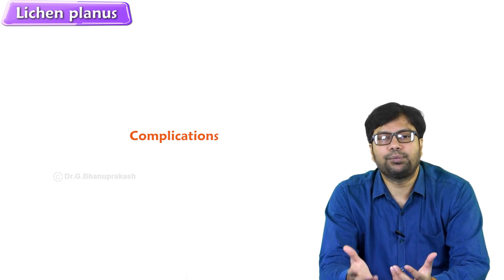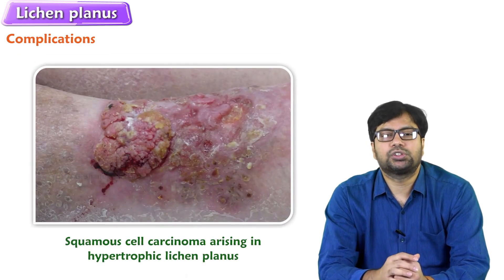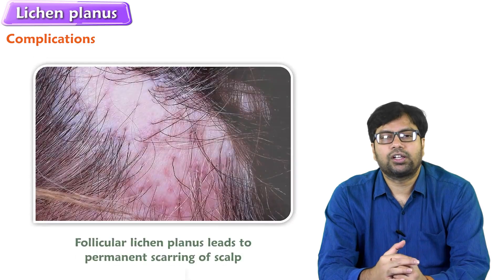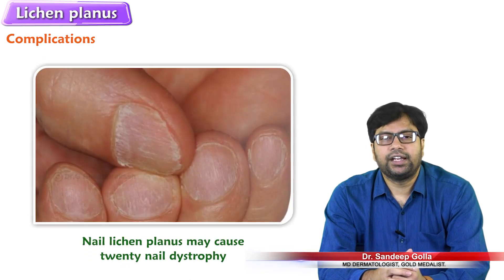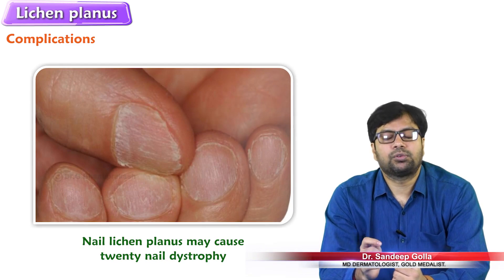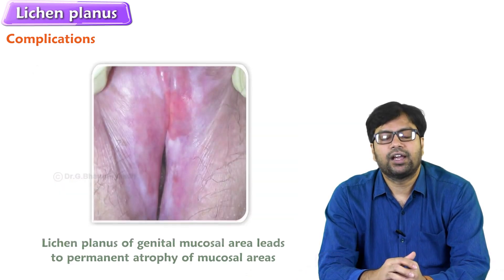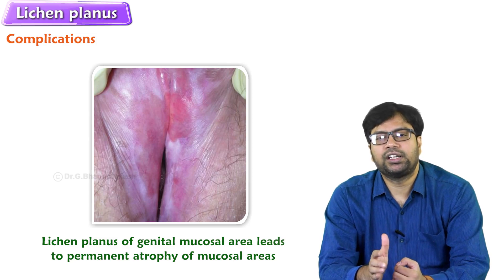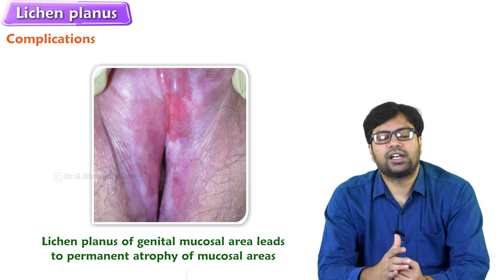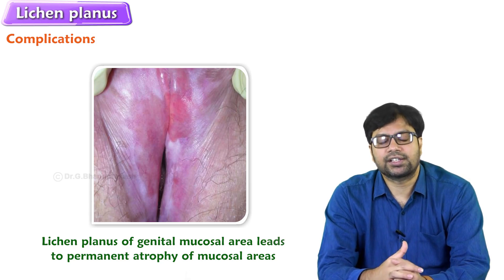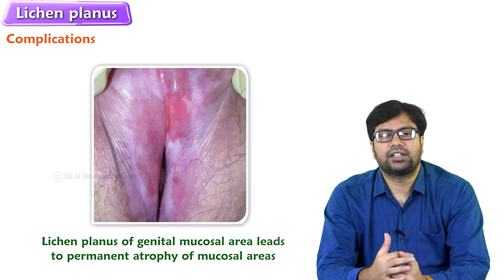However, hypertrophic lichen planus may lead to squamous cell carcinoma. Follicular lichen planus may lead to permanent scarring of the scalp. Nail lichen planus may cause 20-nail dystrophy with permanent dystrophy of the nails. Lichen planus of the mucosal and genital areas may lead to permanent scarring and atrophy of the mucosal areas. By this I conclude — thank you.